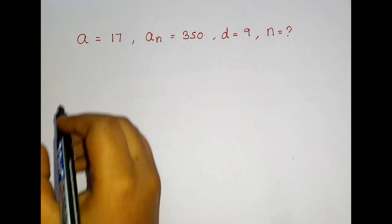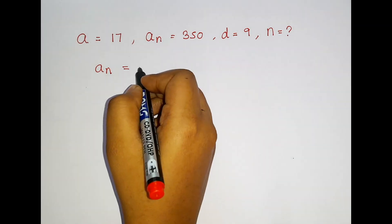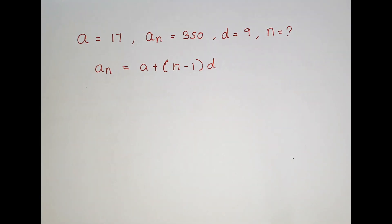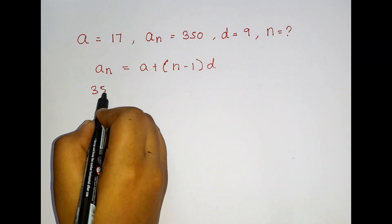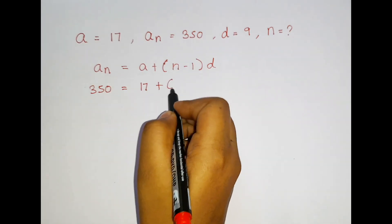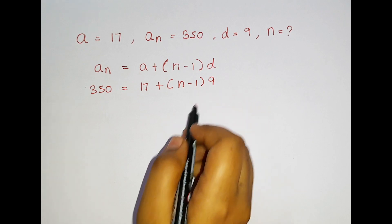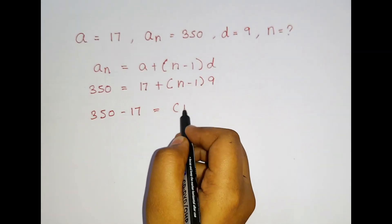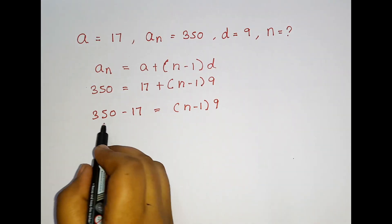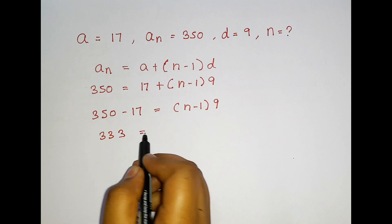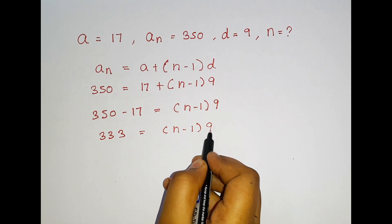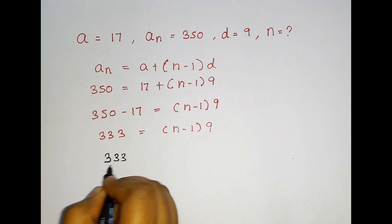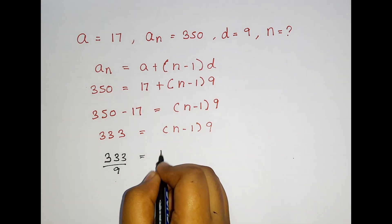So now let us apply the formula. The formula is AN = A + (N−1) × D. Now let us substitute the values: AN value is 350 = A value 17 + (N−1) × D which is 9. Now I am going to bring 17 to the other side, so it changes into: 350 − 17 = (N−1) × 9, which gives 333 = (N−1) × 9. Since 9 is in multiplication, when it comes to the other side it becomes division: 333 ÷ 9 = N−1.